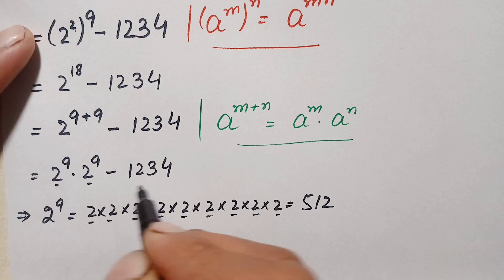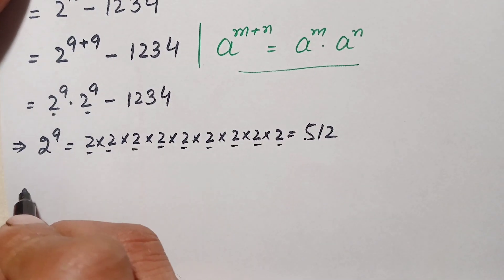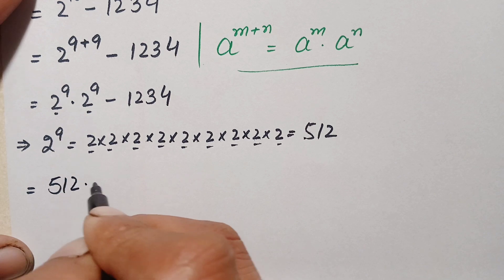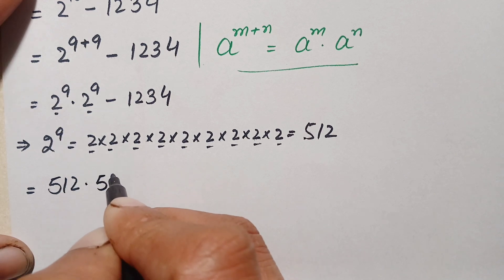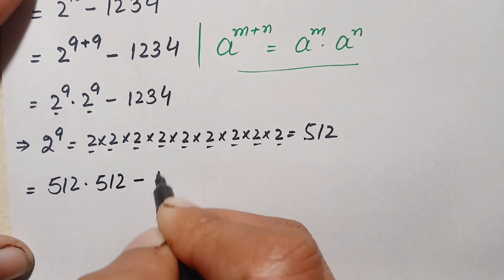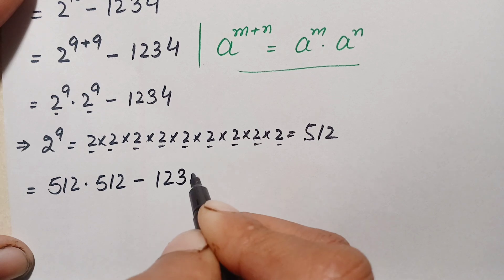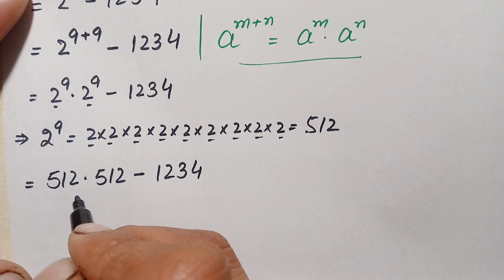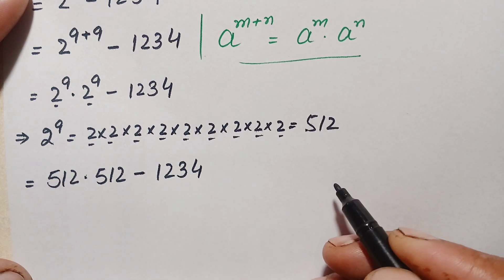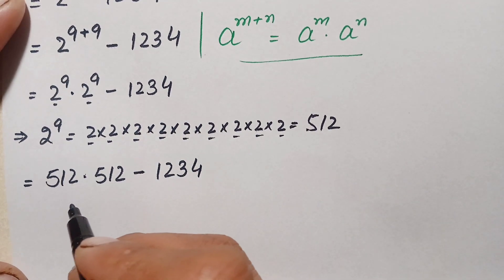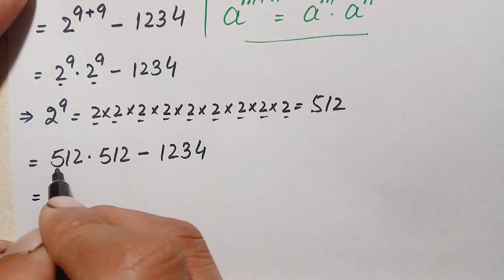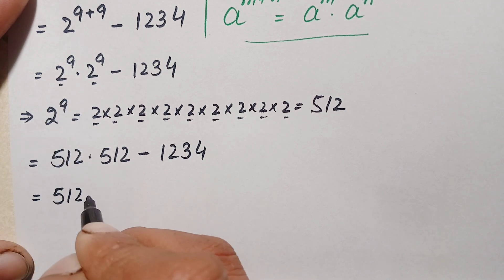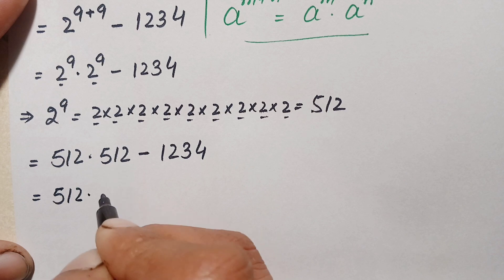We replace both instances of 2 raised to power 9 with 512. So this number becomes 512 times 512, minus 1234. Now we have to multiply these two numbers without using a calculator and without standard long multiplication, so we use a trick: we write the first number as 512, and decompose the second number by place value.